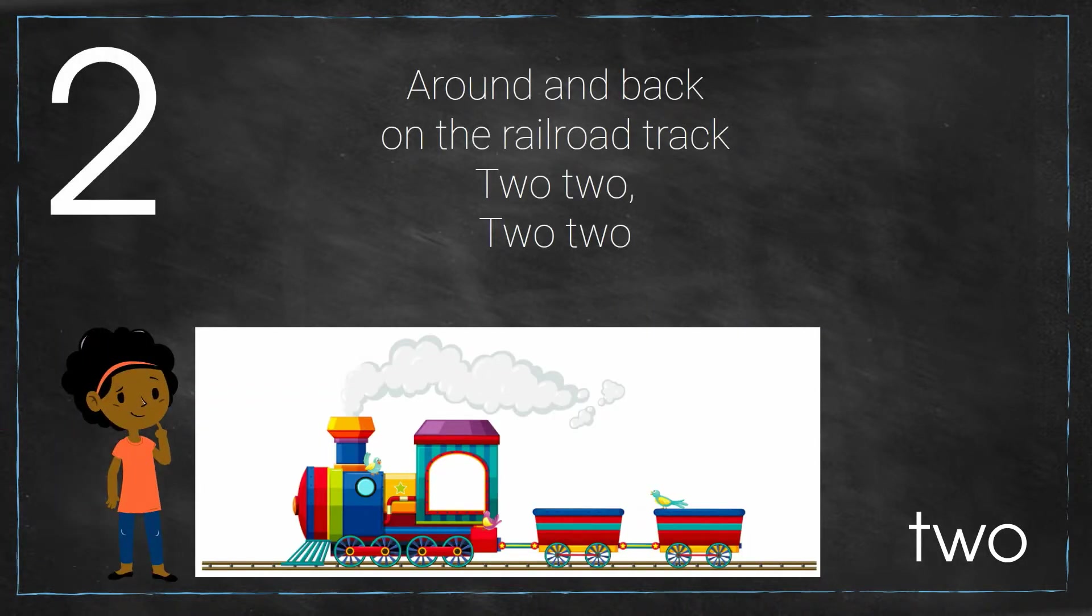Two. How do we write the number two? Around and back on the railroad track, two two two two.